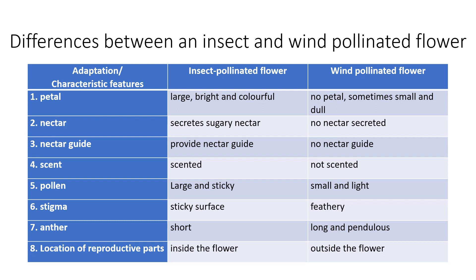To summarize, we describe the characteristic features of insect and wind-pollinated flowers. Starting with the petals: the insect-pollinated flower has petals that are large, bright, and colorful, while the wind-pollinated flower has no petals, or if it does, the petals are small and dull.